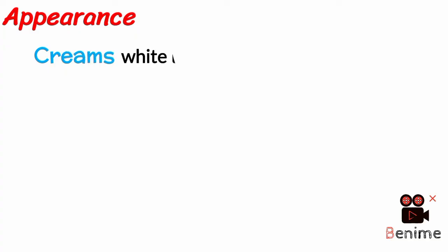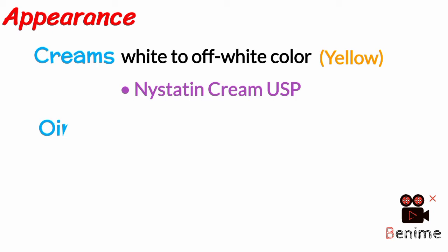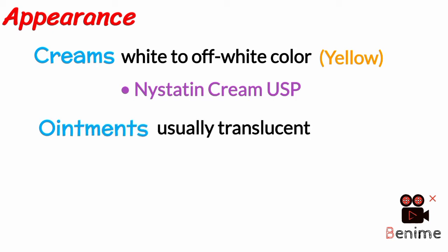Appearance: Generally, creams are white to off-white color, but may have different colors, such as yellow — for example, Nystatin Cream USP. While ointments are usually translucent, but may have various colors, like light yellow, yellow and black, etc.